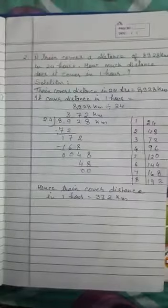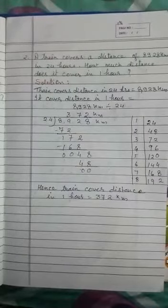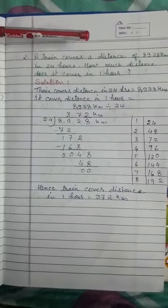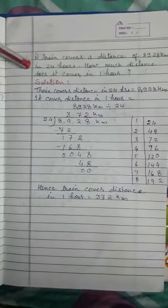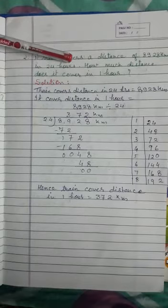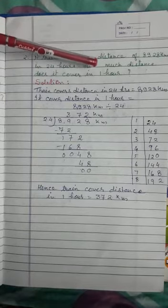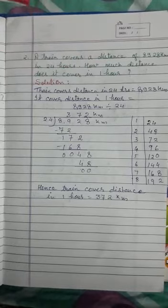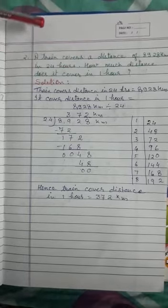Another example: A train covers a distance of 8928 kilometers in 24 hours. How much distance does it cover in one hour?